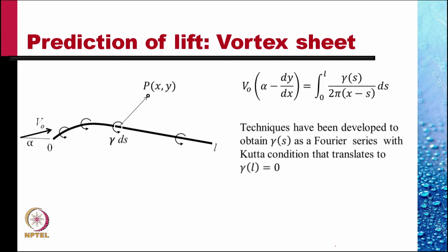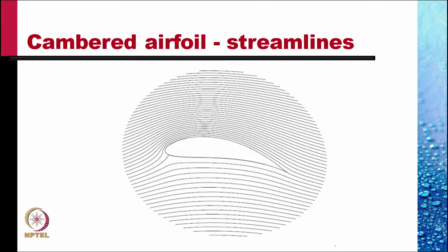Techniques have been developed to obtain gamma s as a Fourier series with Kutta condition that translates to gamma l equals zero. With these we can find out the flow about a cambered aerofoil.